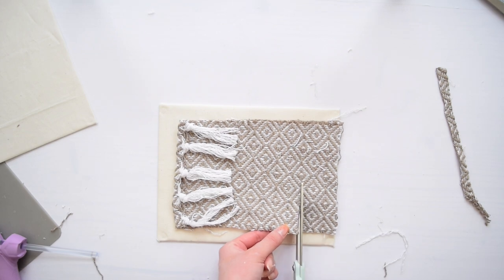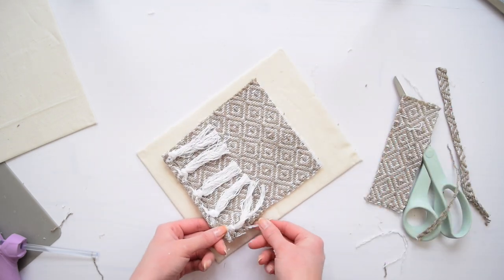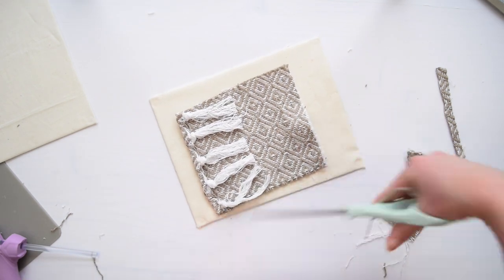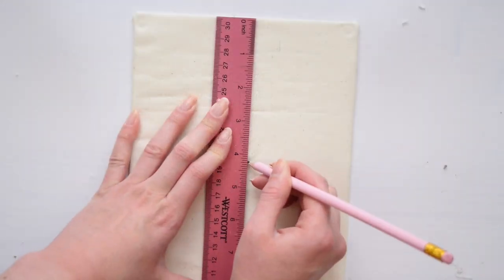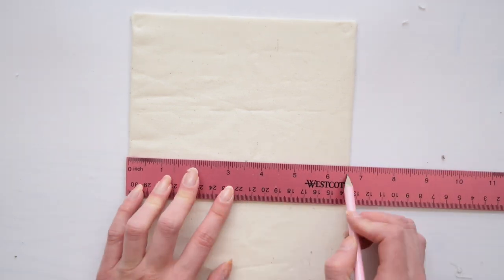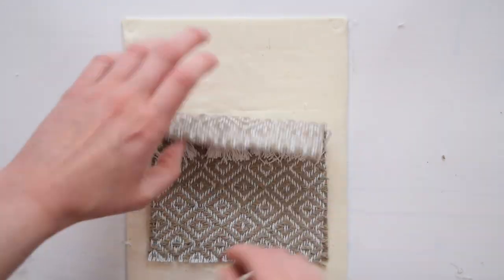Now to really elevate this, I decided to fray the edges just a little bit so it didn't look so neatly and freshly cut. Then I found the middle of the backing here and then the middle of the little tapestry piece and hot glued it down to the backing.